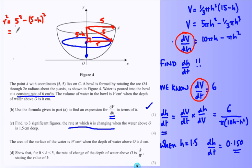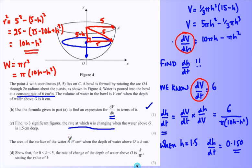So by Pythagoras, let's work this out. Multiply out the bracket, and we get 10h - h². So that's r². So the surface area W is πr². And r² by Pythagoras is 10h - h².